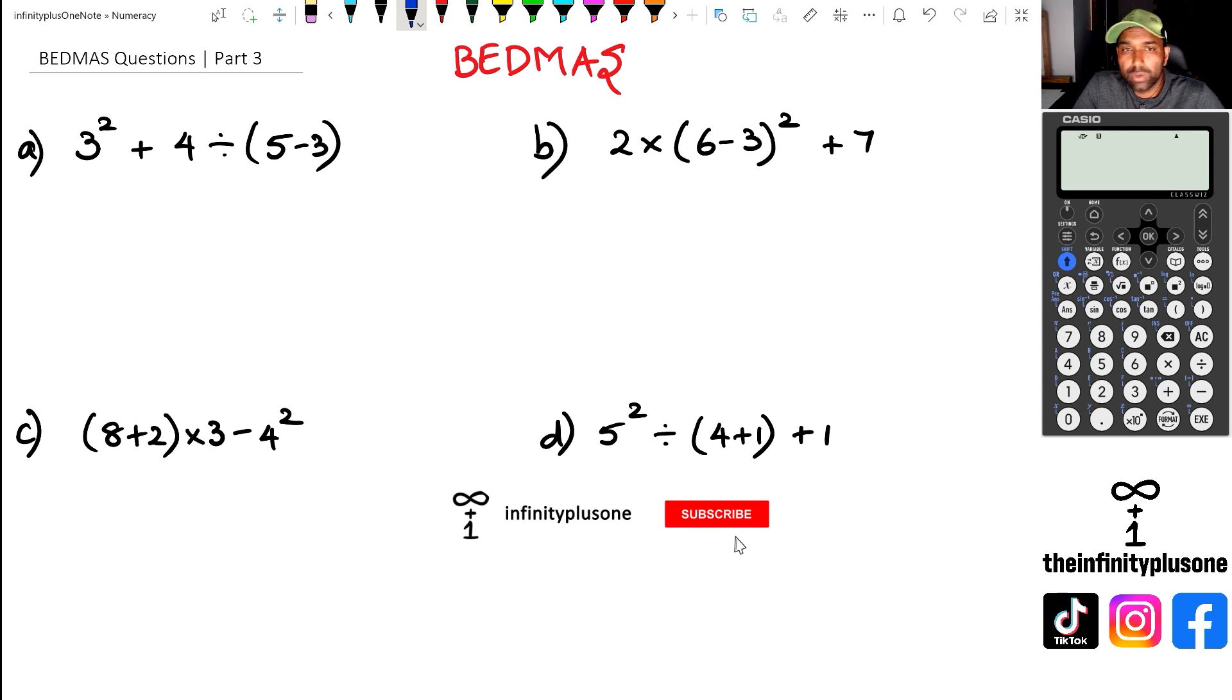So just a quick little recap with BEDMAS. We've got B for brackets, E for exponents or powers, D for division, M for multiplication, A for addition, and S for subtraction.